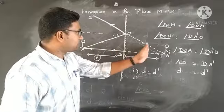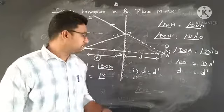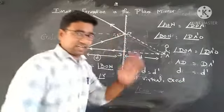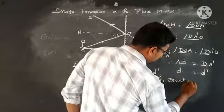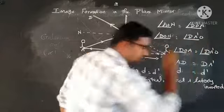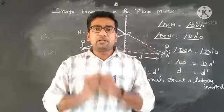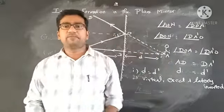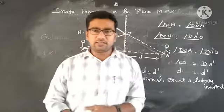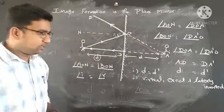The second characteristic is that the image produced by the plane mirror is a virtual image — it is an erect, that is straight, image. The third characteristic is that it is laterally inverted. What is meant by laterally inverted? If you show your book in front of a plane mirror, all the letters appear inverted. In front of the plane mirror, your right hand appears on the left side and your left hand appears on the right side. This is lateral inversion.